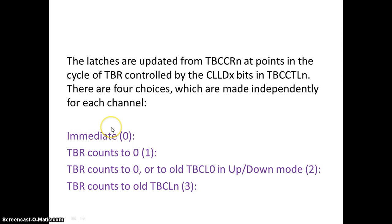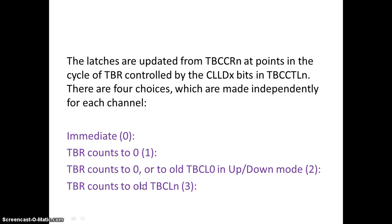In immediate mode, as soon as you write a value to the TBCCR register, it is loaded straight away into the TBCL register. For the next mode, when TBR counts to zero, the counter value gets loaded. In up or continuous mode, loading occurs when the counter reaches zero. In up-down mode, the value is updated when the counter reaches the old TBCL value or when TBR counts to N.